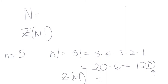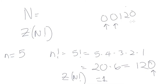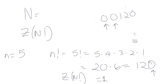So here, 120 has one trailing zero, meaning z of n factorial equals 1. When we say trailing zeros, we mean zeros at the end of the number — zeros in front don't count. There's only one trailing zero here.